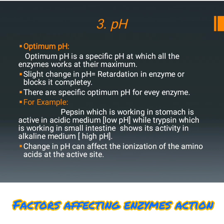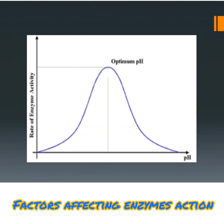When there is a change in pH, it affects the ionization of the amino acids at the active site. In this graph, optimum pH is shown as the peak level of enzyme reaction, and after exceeding the optimum pH, retardation of enzyme action takes place.